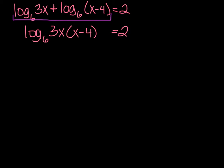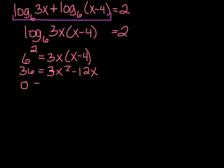So now I'm going to rewrite it. 6 is the base, 2 is the exponent, 3x times x minus 4 is what it equals. And so that's saying 36 equals, and I'm going to distribute the 3x so that I have 3x squared minus 12x. So now I know I've got an x squared. I'm trying to solve a quadratic. Quadratics must be set equal to 0. So 3x squared minus 12x minus 36.